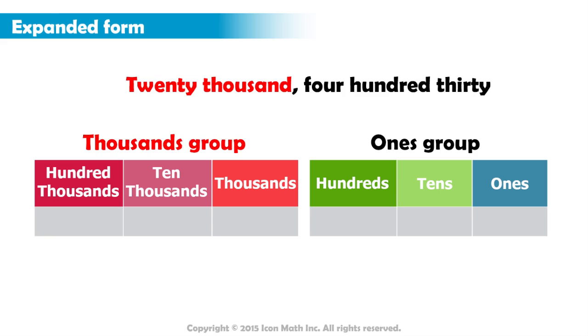The thousands group consists of the thousands place, the ten thousands, and the hundred thousands. Since we have 20 in this group, we write the 2 in the ten thousands place, and 0 in the thousands place.